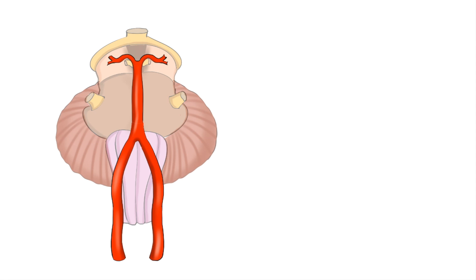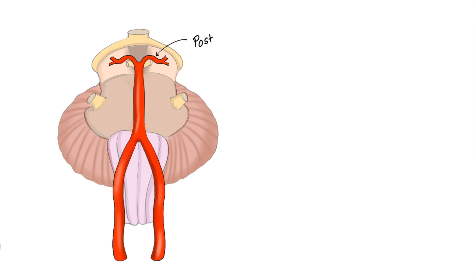At this point, basilar artery divide into terminal branches. These two terminal branches move posteriorly. So what is the name of these two arteries? They are posterior cerebral arteries. Basilar arteries divide into two terminal branches just above the root of third cranial nerve roots.